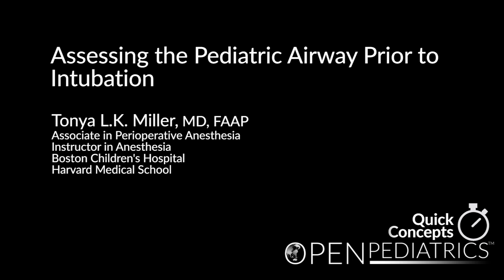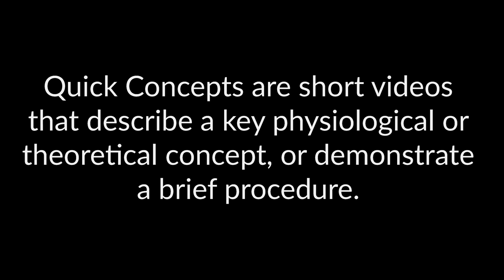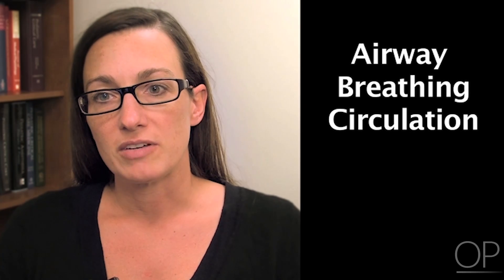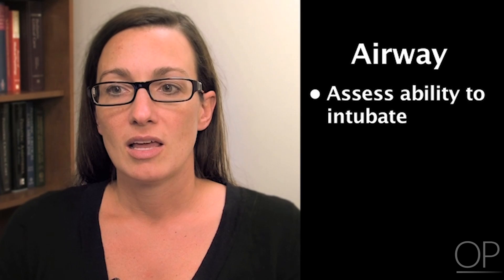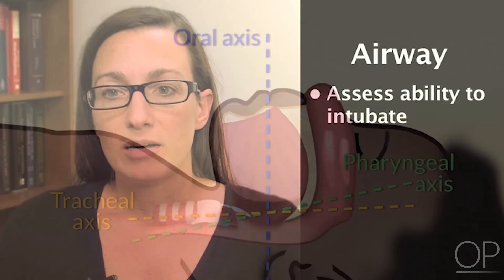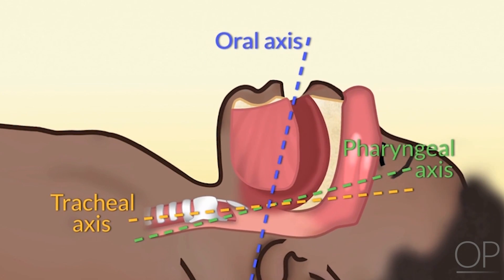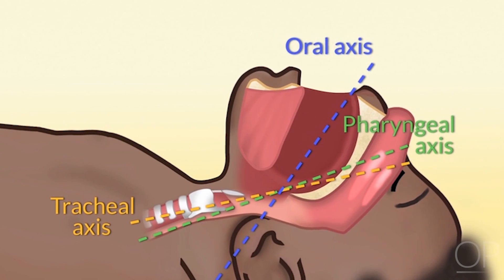Assessing the Pediatric Airway Prior to Intubation, by Dr. Tonya Miller. As far as a specific airway exam, you're assessing the ability to intubate. Alignment of the oral axis and the tracheal axis is one thing you need to keep in mind — are you going to be able to align these axes in this patient, or not? How difficult will it be?